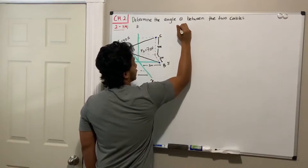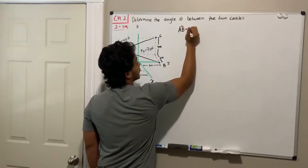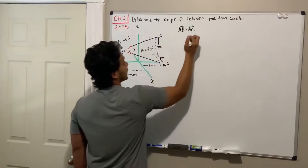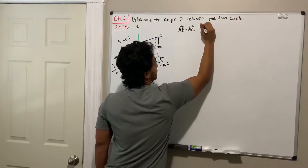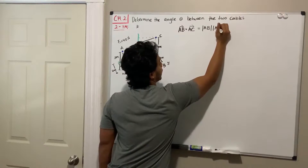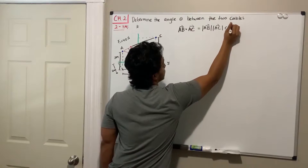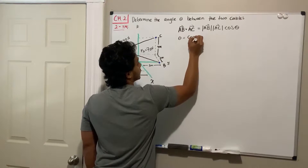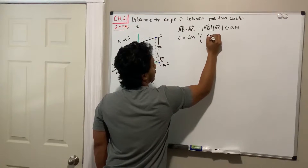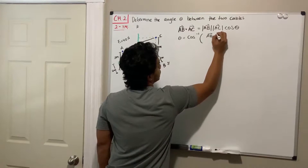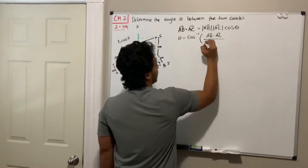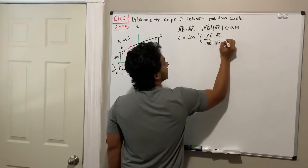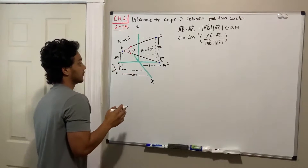In order to determine the angle theta between these two cables, the dot product of vectors AB and AC is equal to the product of both magnitudes times the cosine of theta. So if we want to solve for theta, it will be equal to the inverse cosine of the dot product divided by both magnitudes — the magnitude of AB times the magnitude of AC.